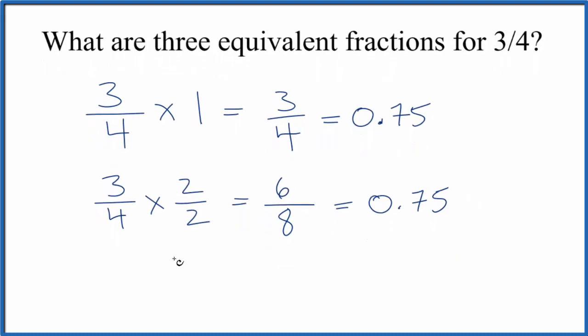Let's do one more. Three-fourths times, you guessed it, three over three. That's the same thing as one. So three times three is nine, four times three is twelve. Nine-twelfths is an equivalent fraction to three-fourths.